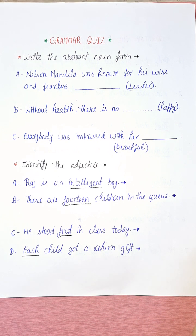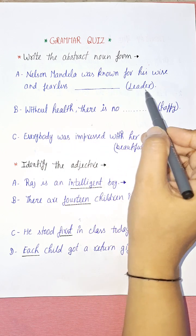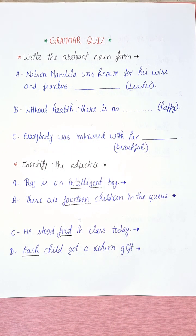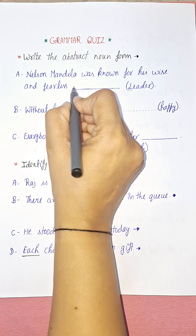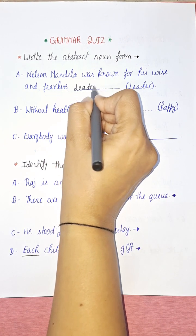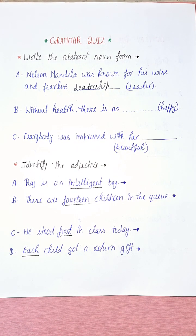Now let's have the first question. Nelson Mandela was known for his wise and fearless leader. So 'leader' is a noun — you can see a leader, like Narendra Modi or Vladimir Putin. But what will be the abstract noun of leader? It's going to be 'leadership'. So: Nelson Mandela was known for his wise and fearless leadership. Leadership is the quality — it is an abstract noun which you only feel and experience.